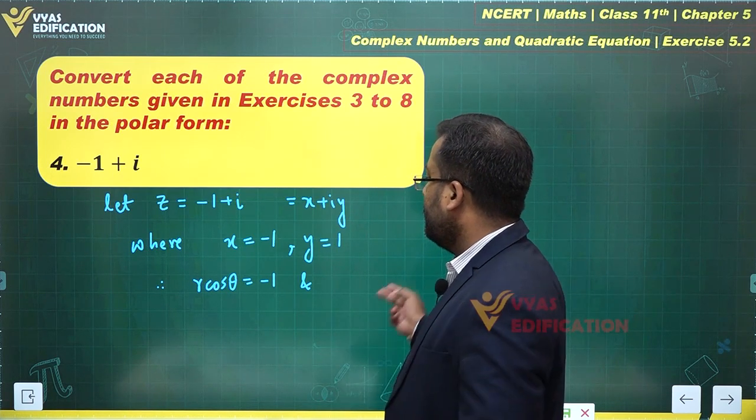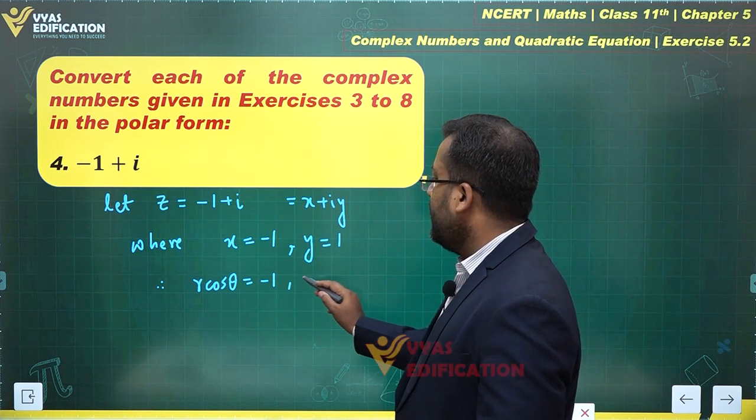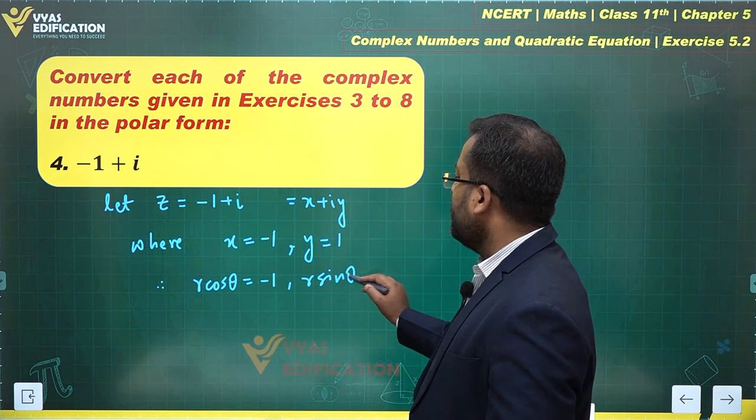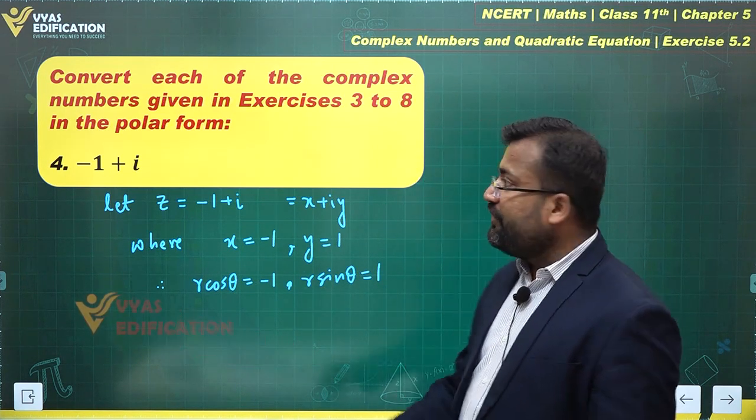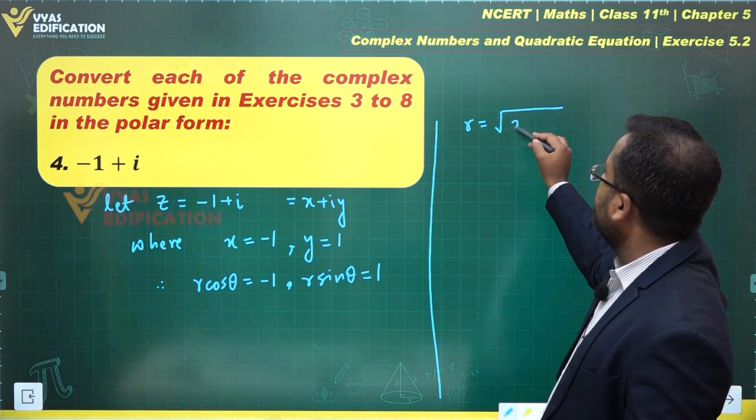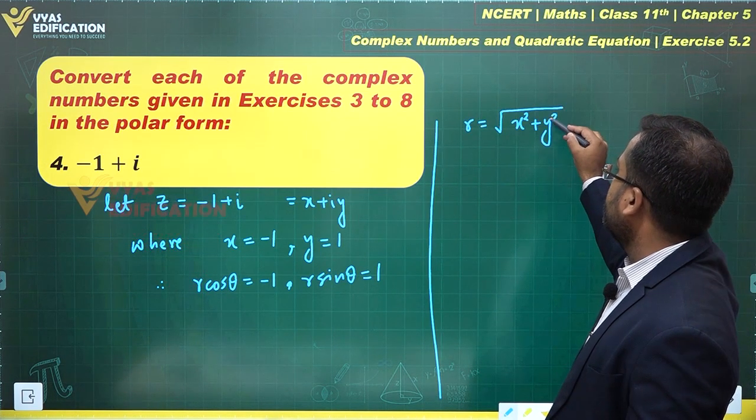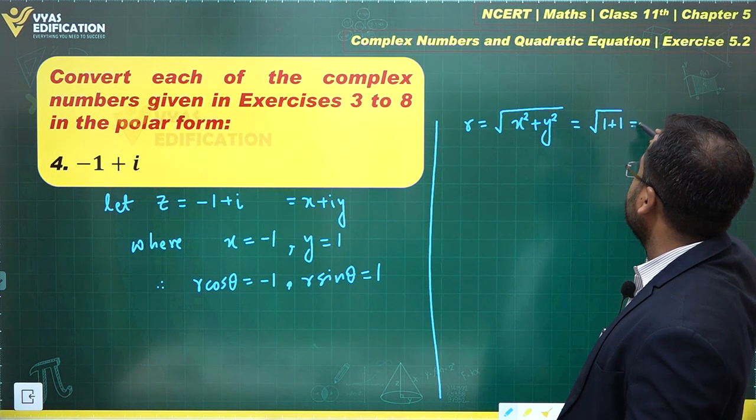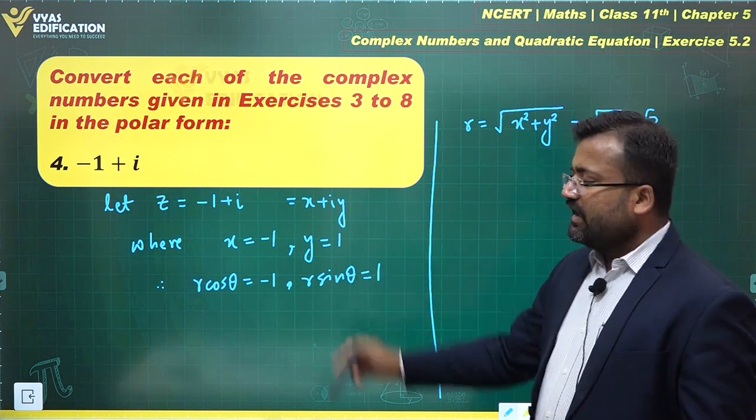We can find the value of r easily. r equals square root of x squared plus y squared, which is square root of 1 plus 1, which is square root of 2. You can clearly observe that.